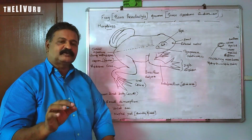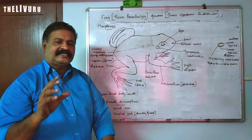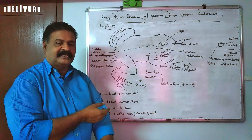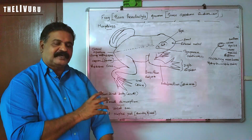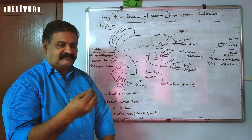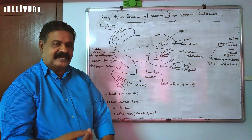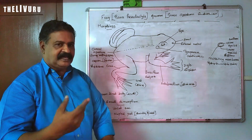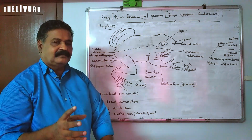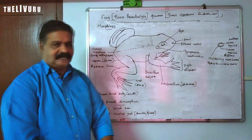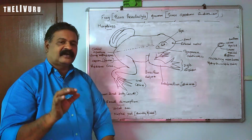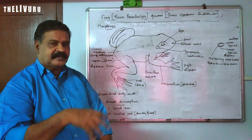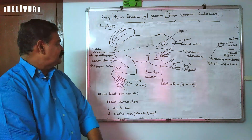At the posterior end there is an aperture called the anus or cloaca. This aperture is used for eliminating fecal matter and waste excreta. It is also used for reproduction.